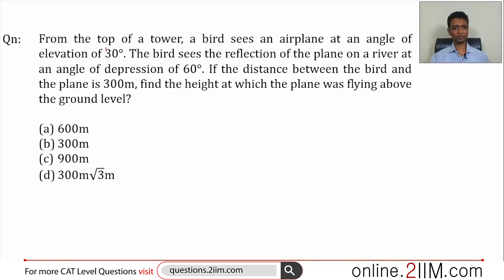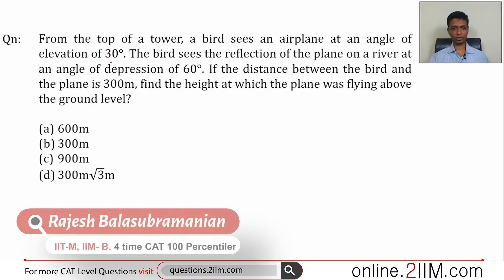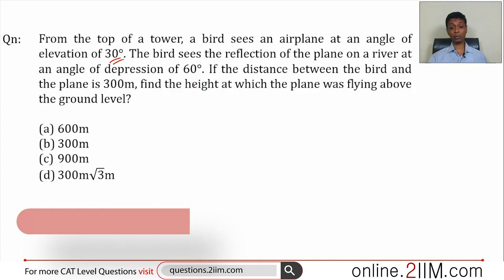This is on trigonometry. Let's do this one. From the top of a tower, a bird sees an airplane at an angle of 30 degrees. The bird sees the reflection of the plane on a river at an angle of depression of 60 degrees.